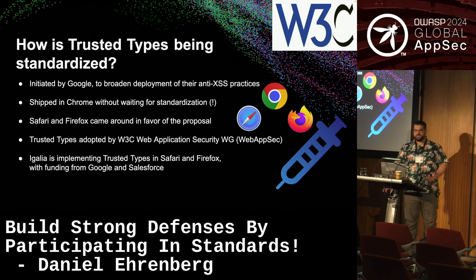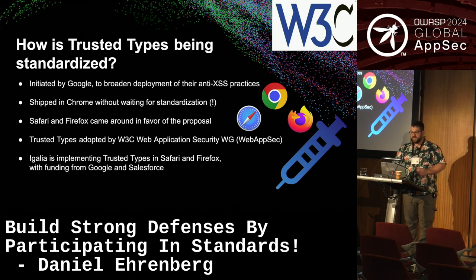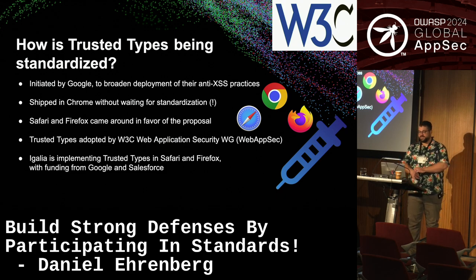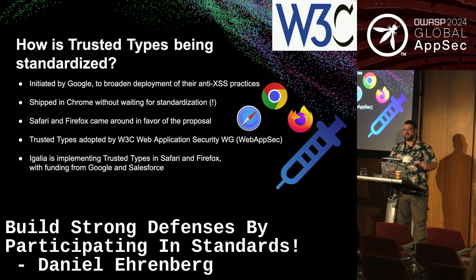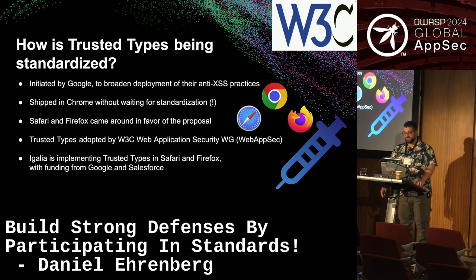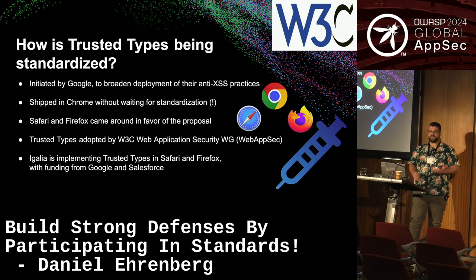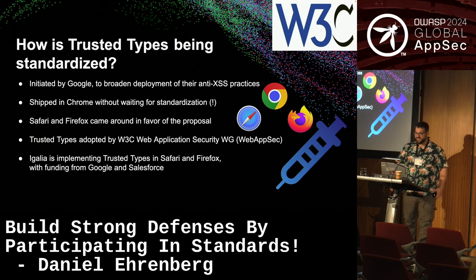Trusted Types was an effort initiated by Google. They had some version of this enforced through their build strategy to prevent cross-site scripting, and they wanted to add it to the web platform to improve enforcement and broaden deployment. It was shipped in Chrome without standardization and without even a detailed technical document defining it — not my favorite thing, but it was an important feature. Now there's ongoing work to backfill the standard and consensus building rigor. This is going really well — Safari and Firefox have come around in favor of the proposal. It's being developed in the W3C Web Application Security Working Group, also called Web App Sec, and implementation work is going on from Egalia in both those other browsers.